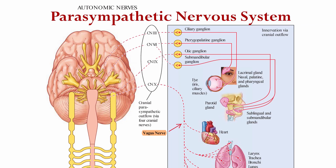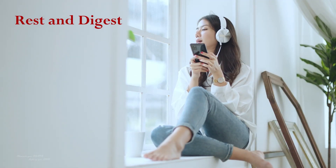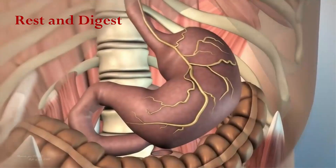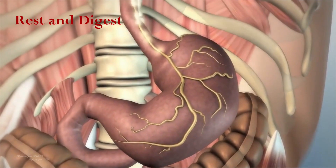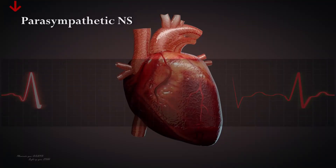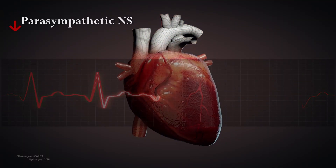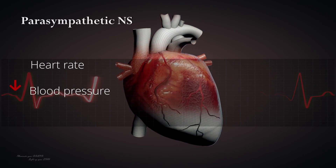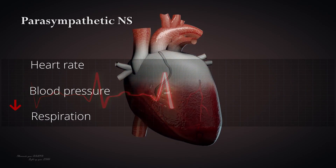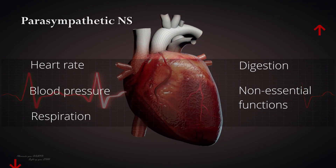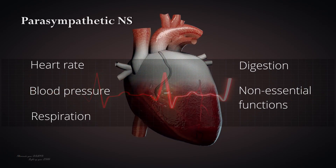The parasympathetic nervous system is responsible for the rest-and-digest response, which is activated during periods of relaxation and rest. When activated, it causes a decrease in heart rate, blood pressure, and respiration, and an increase in digestion and other non-essential functions.